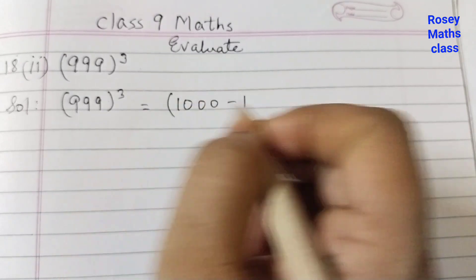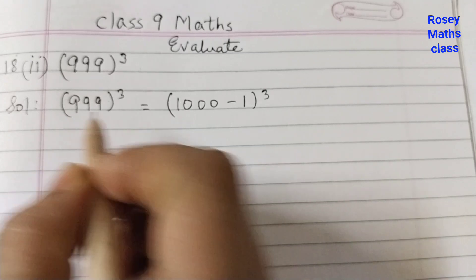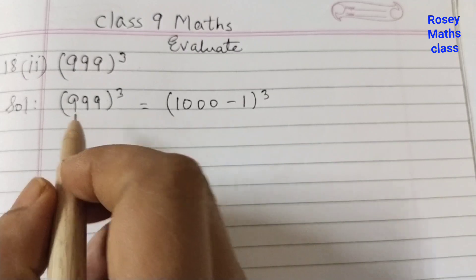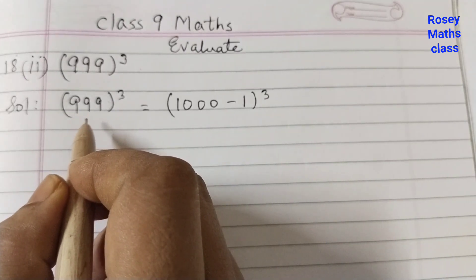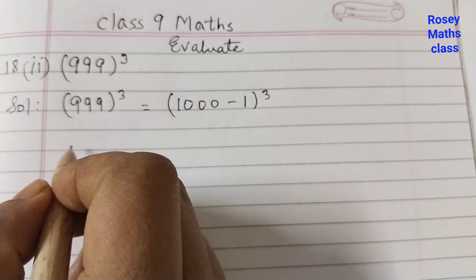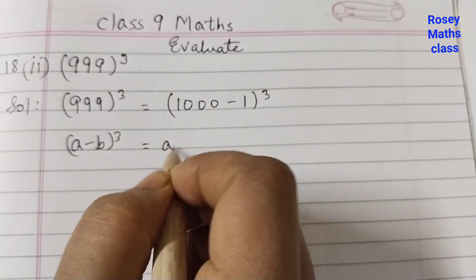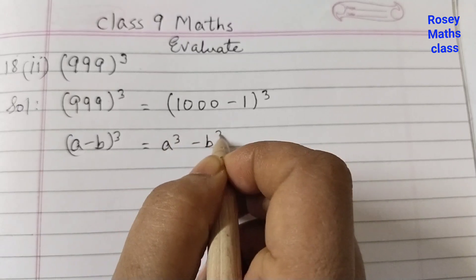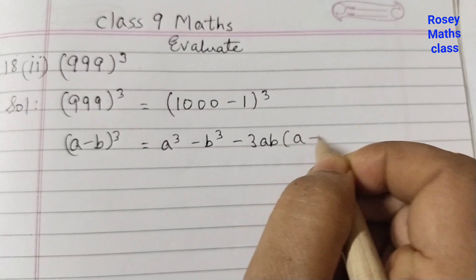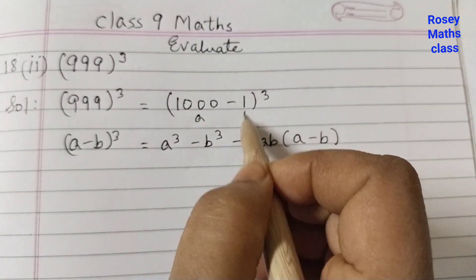Because 999 is closer to 1000, we write it as 1000 minus 1. Always try to find a number with zeros, as that makes our task easier. We will use the identity for (a minus b) cubed, which is a³ minus b³ minus 3ab(a minus b). Here, a is 1000 and b is 1.